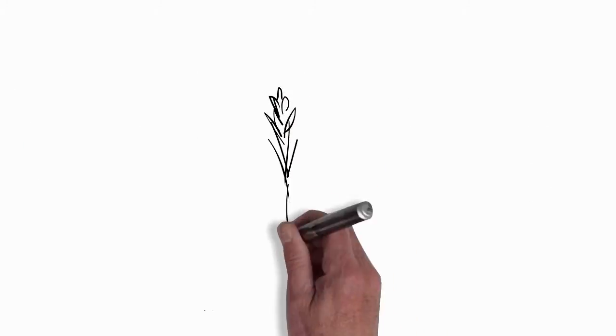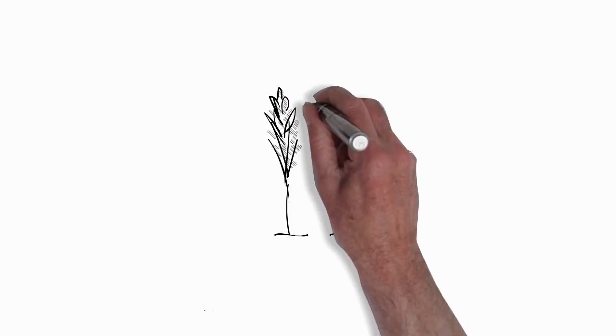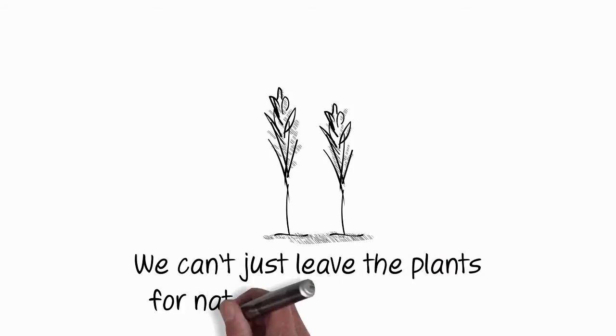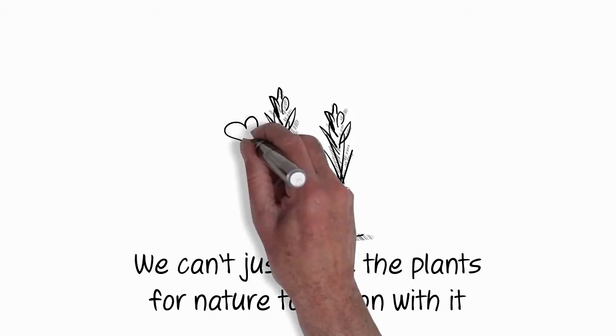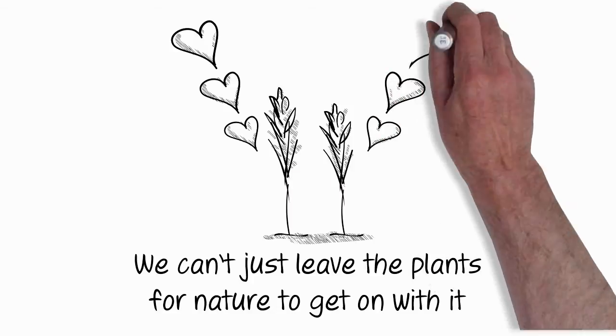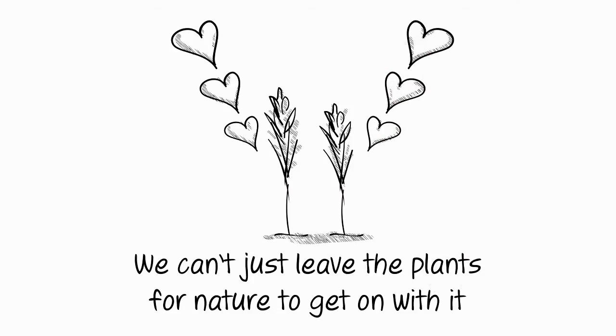You couldn't just leave the plants in a glass house and let nature get on with it because it's quite an important tissue culture step that happened naturally 10,000 years ago but we don't quite know how. So we have to intervene.